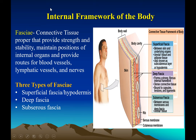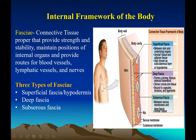The internal framework of the body is called fascia — connective tissue proper that provides strength, stability, maintains position of internal organs, and provides a route for blood vessels, lymphatics, and nerves. Superficial fascia, also called the hypodermis or subcutaneous layer, is right between the skin and underlying organs, made of areolar tissue and fat. Deep fascia is a strong fibrous internal framework made of dense connective tissue that forms capsules, tendons, and ligaments. Subserous fascia is found between serous membranes and deep fascia, made of areolar connective tissue.